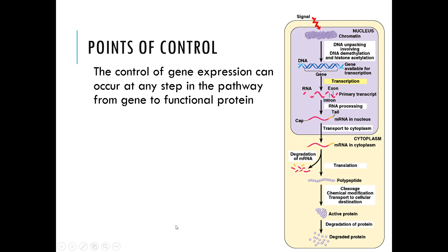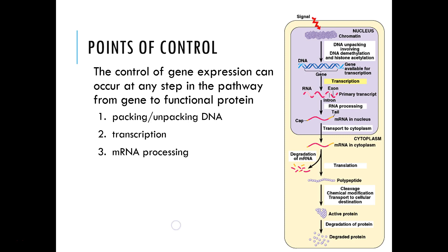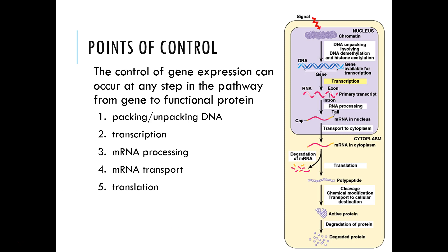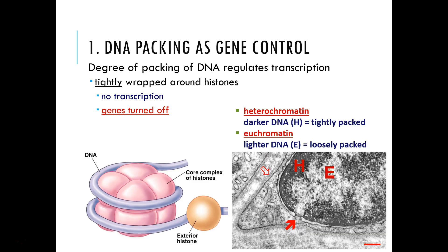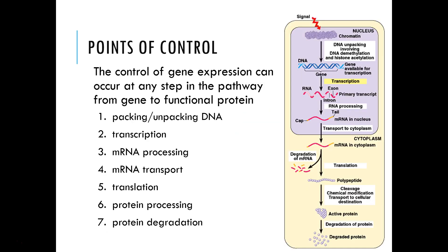In order to do this, there are actually seven points of control: packing and unpacking DNA, transcription, mRNA processing, mRNA transport, translation, protein processing, and finally protein degradation. We're going to go over each of these in turn.